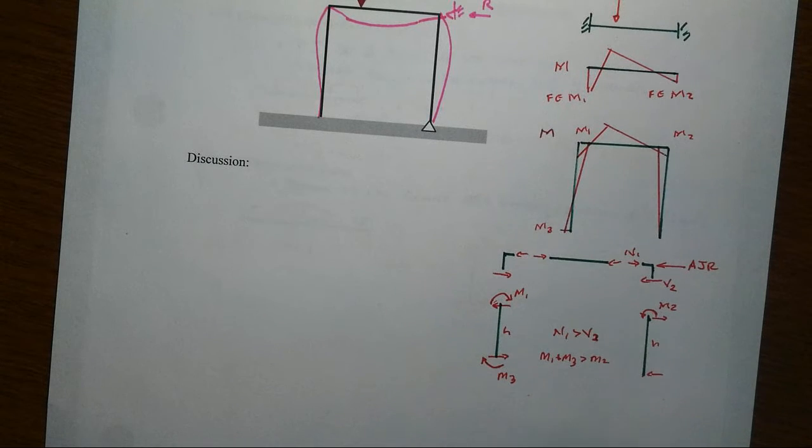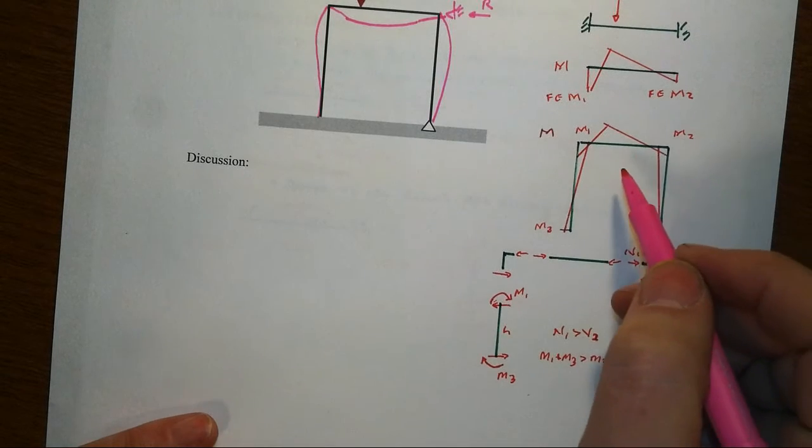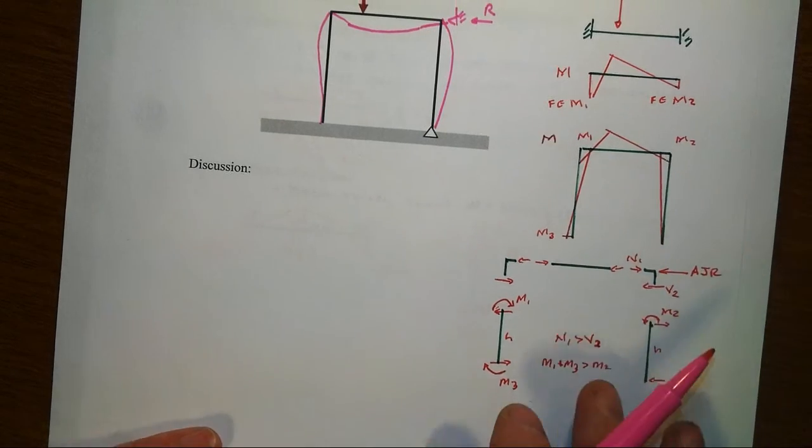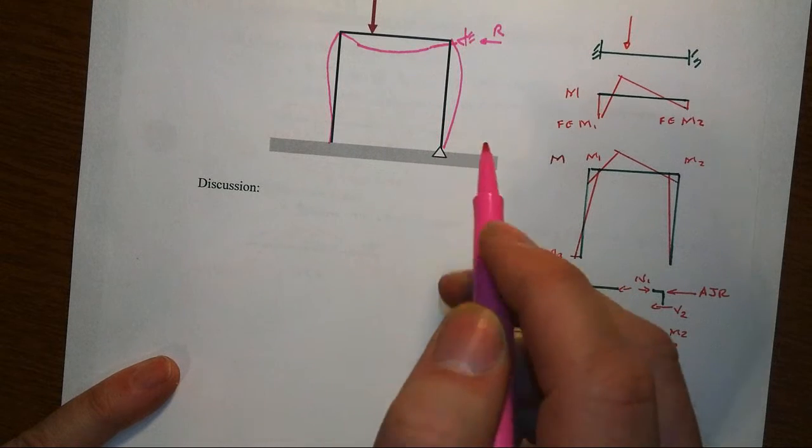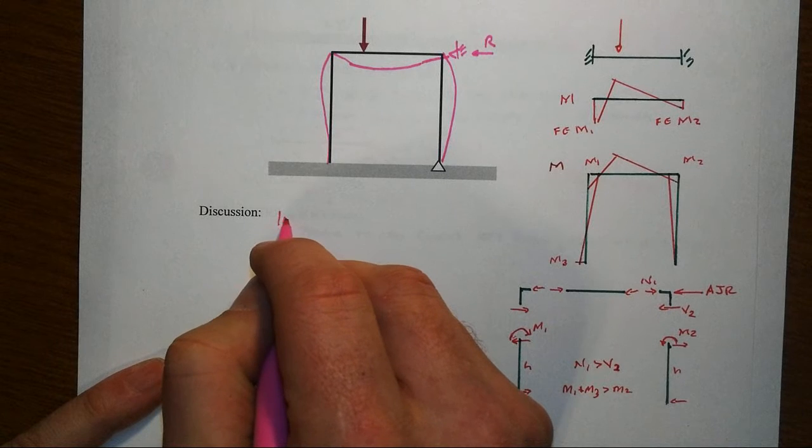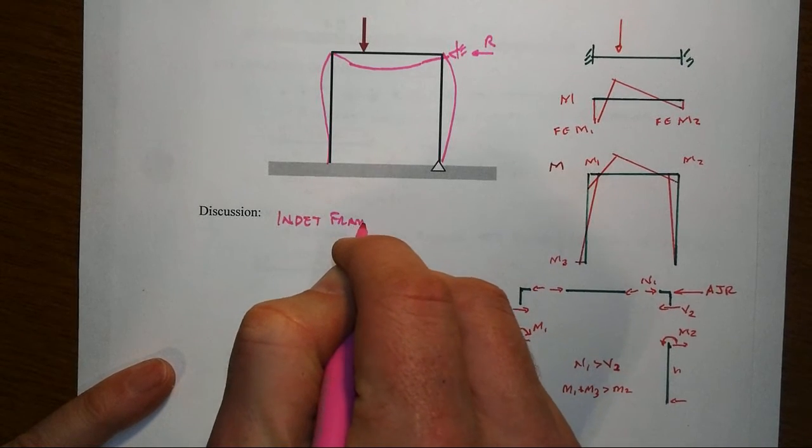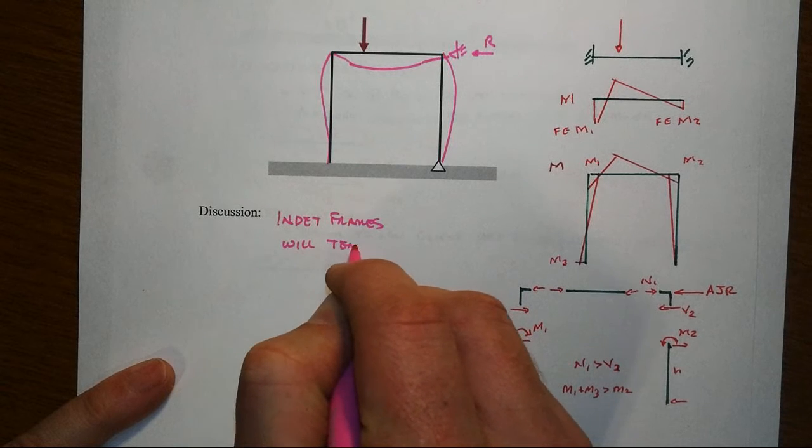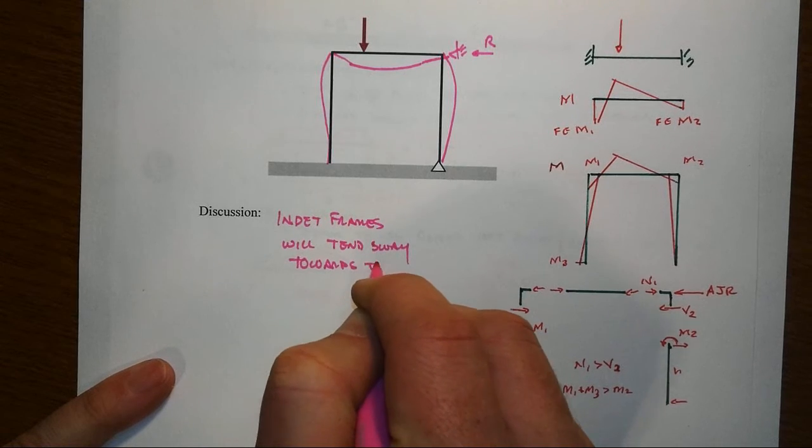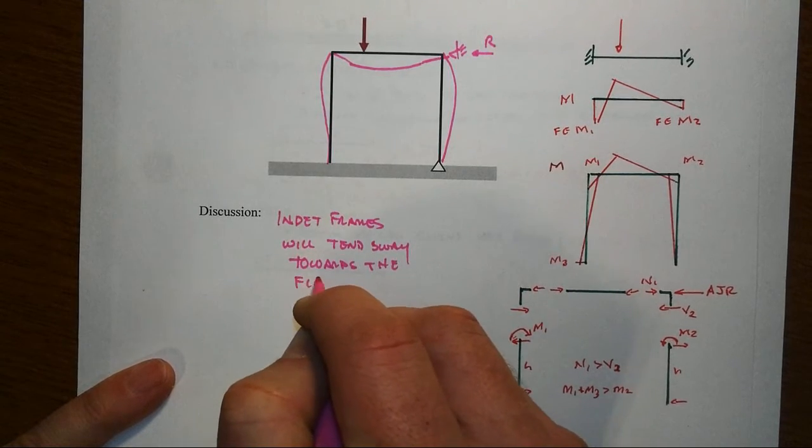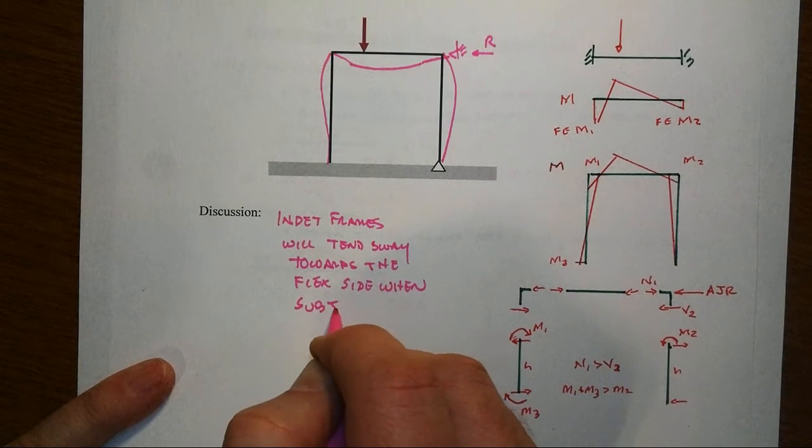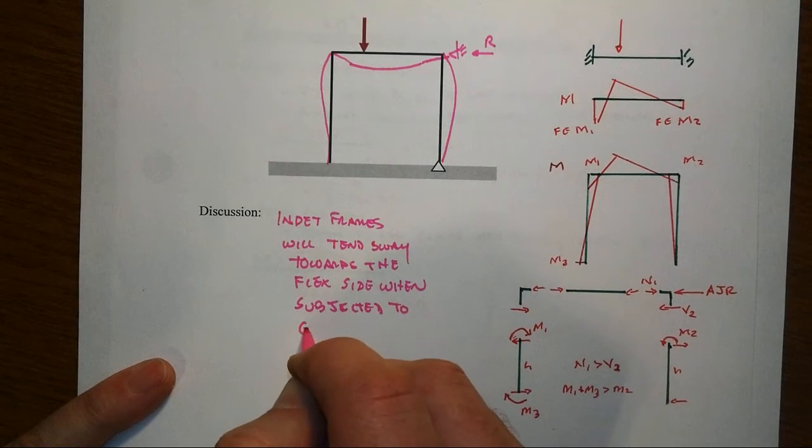How are you supposed to figure that out from just the basis of what we've done? One of them is you draw the moment diagram that suggests something to you. And again, this fixed-end moment at the left being greater than the fixed-end moment at the right, and that gives you some idea of the overall shape. But the bigger thing that we learned multiple times is that indeterminate frames will tend to move or sway towards the more flexible side when subjected to gravity loads.